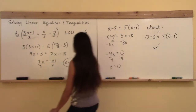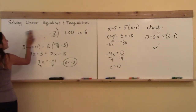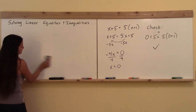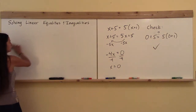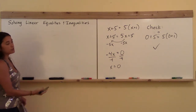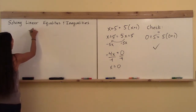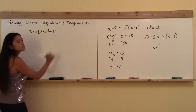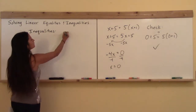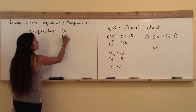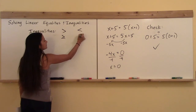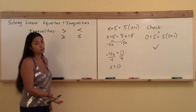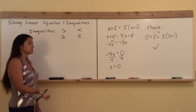Now we're going to focus on the inequalities part. The difference is that it's not an equal sign anymore — now it's going to be less than, greater than, and there are all different types of inequalities. Let me write down what the different types are. We've got four: greater than, greater than or equal to, less than, and less than or equal to. Those are your four different categories of inequalities.